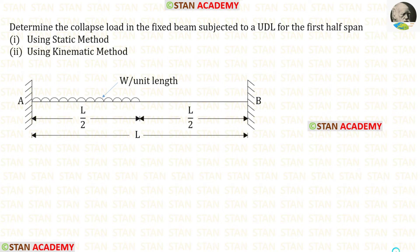Hello everyone. Today we are going to find the collapse load in a fixed beam when it is subjected to a uniformly distributed load for the first half span. We are going to use two methods: the static method and the kinematic method.